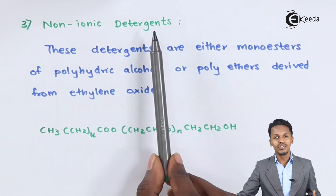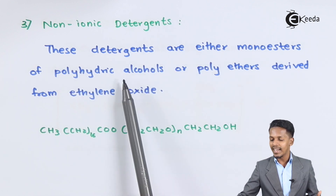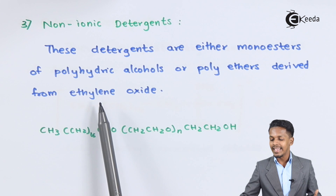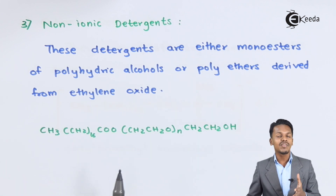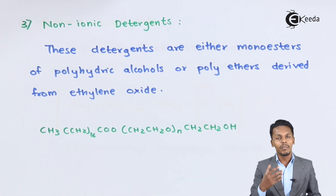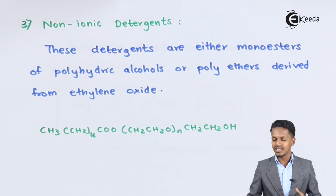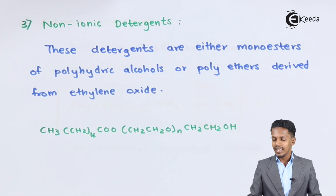Non-ionic detergents are either monoesters or polyhydric alcohols or polyethers derived from ethylene oxide. These are very much soluble in water, and the hydrocarbons are basically not cationic and not anionic in nature. That is why these are widely used nowadays.